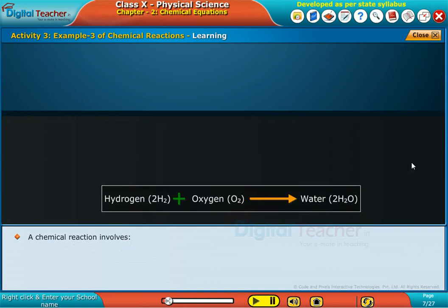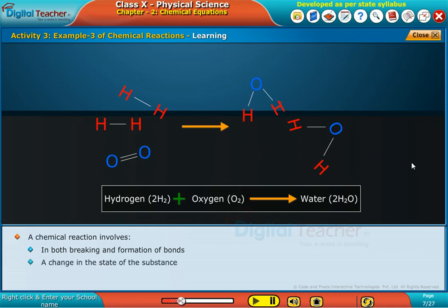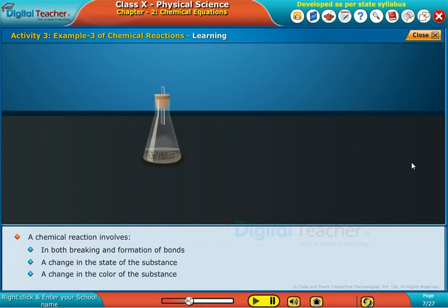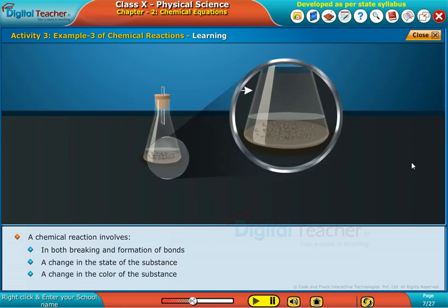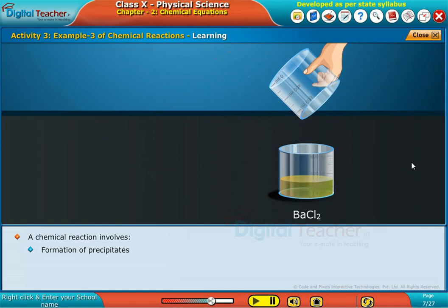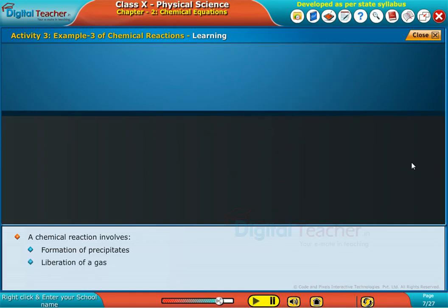A chemical reaction involves: breaking and formation of bonds, a change in the state of the substance, a change in the color of the substance, release of heat energy, formation of precipitates, and liberation of a gas.